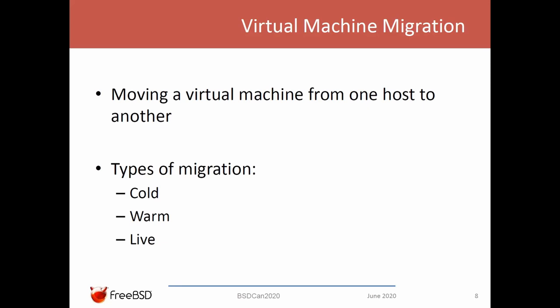The migration procedure means that we want to move a virtual machine from one host to another. There are three types of migration: cold, warm, and live. Cold migration means that we need to shut down the VM, copy its disk image to the destination, and then restart the VM on the destination host.